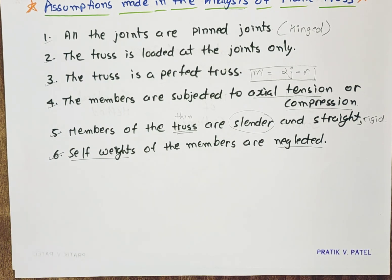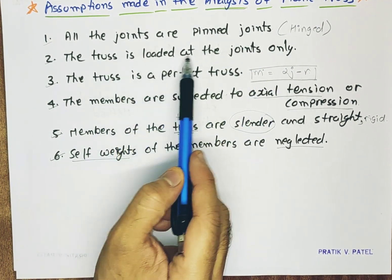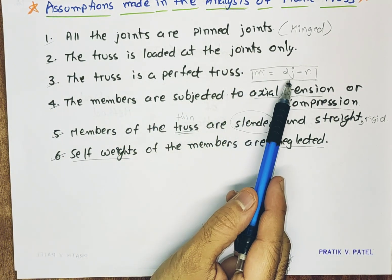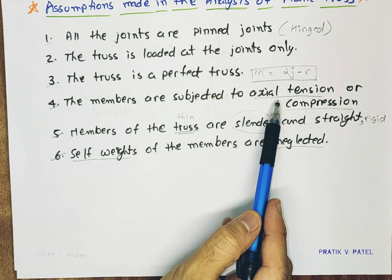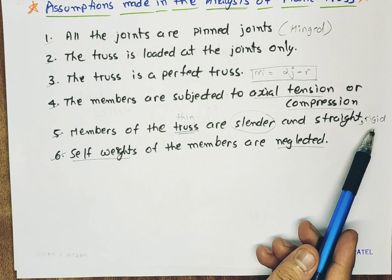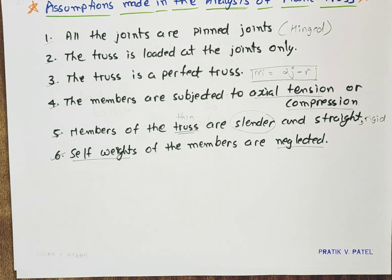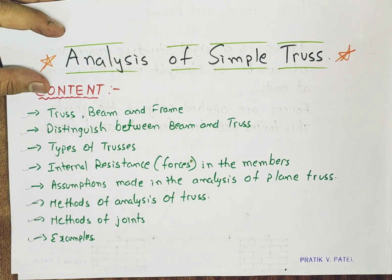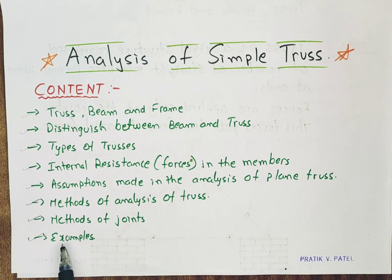Recalling all the assumptions: all joints are pin joints; loaded at the joints only; truss is a perfect truss; members are subjected to axial tension or compression; members of the truss are slender, straight, and rigid; and lastly, self-weight of the members is neglected. So this is it for the fourth lecture. In the fifth lecture, we will be continuing with methods of analysis of truss and methods of joint, and there will be solved examples. So till then, continue reading and do watch all my videos.